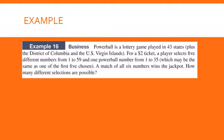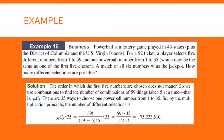Now try this example. The order in which the five numbers are chosen does not matter in this case, so you use a combination of 59 things taken five at a time. Then there are 35 ways to choose one Powerball number from one to 35. By the multiplication principle, the number of different selections is the combination multiplied by 35, giving 175,223,510.